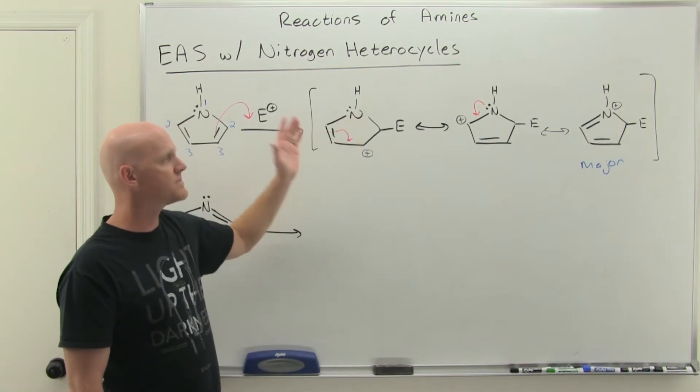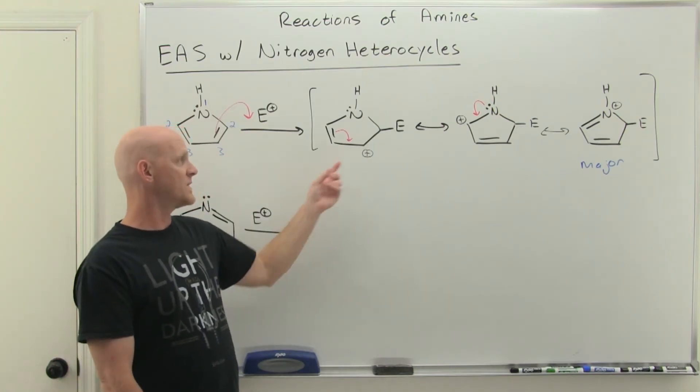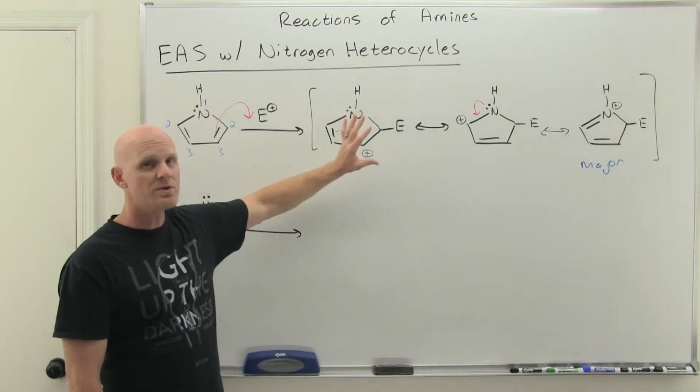And that's why it's going to predominantly happen at the two position. We just get more resonance structures and a more stable sigma complex intermediate along the way when we substitute at the two position. So notice I'm not showing the whole mechanism from here. We just have to go and deprotonate to reestablish aromaticity. But I just want to show it. It's all about the intermediate.